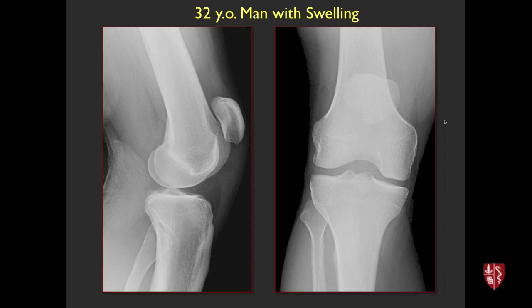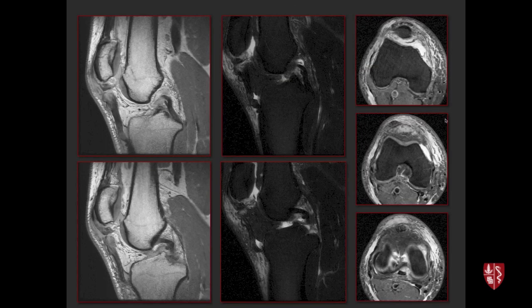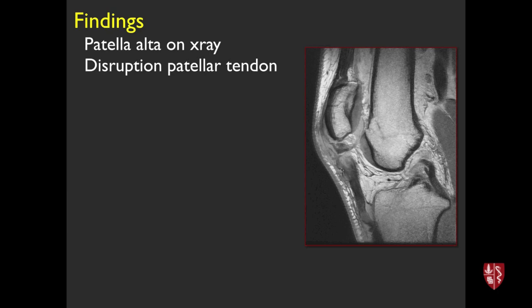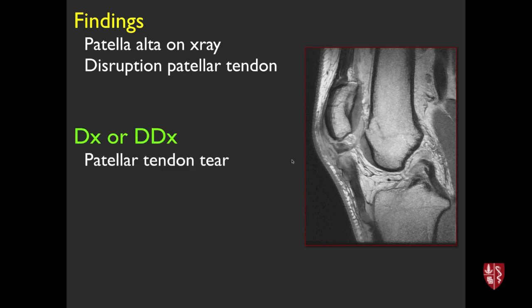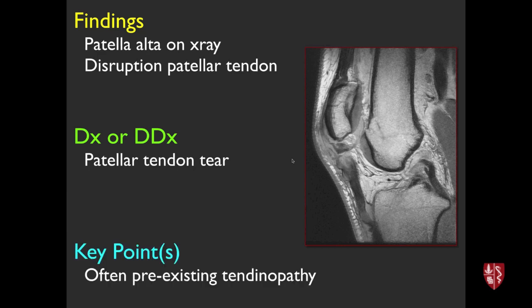32-year-old man with knee swelling. Radiograph showed patella alta. MRI shows disruption of the patellar tendon at the proximal portion — a high-grade, probably complete patellar tendon tear, as evidenced by the elevated patella. These tend to occur in patients with pre-existing proximal patellar tendinopathy or jumper's knee, unless it's a high-energy injury.